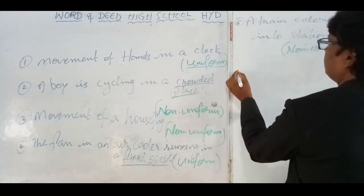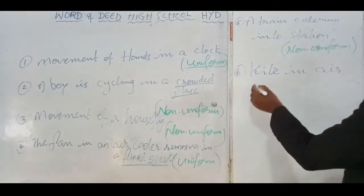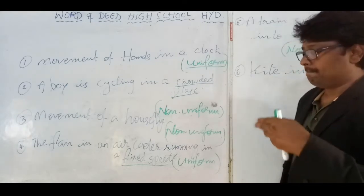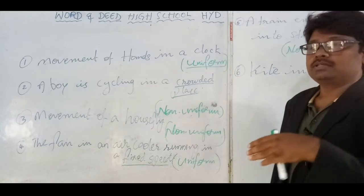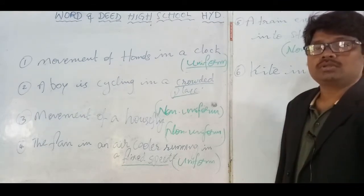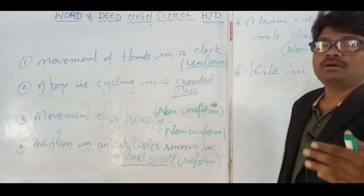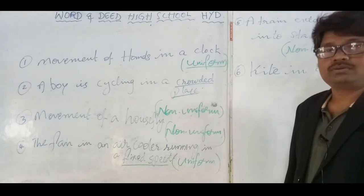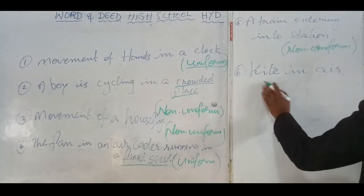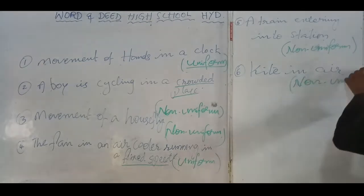Next example: a kite in air. The movement of a kite in air depends upon the movement of the wind. Sometimes the wind may be fast, sometimes the wind may be slow. So you cannot say the kite moves with a fixed speed like uniform motion. Therefore, you can say that is in non-uniform motion.